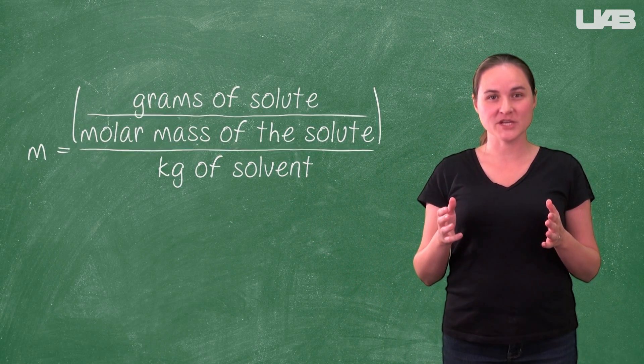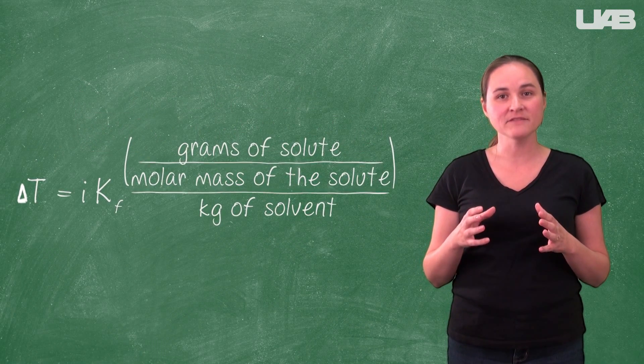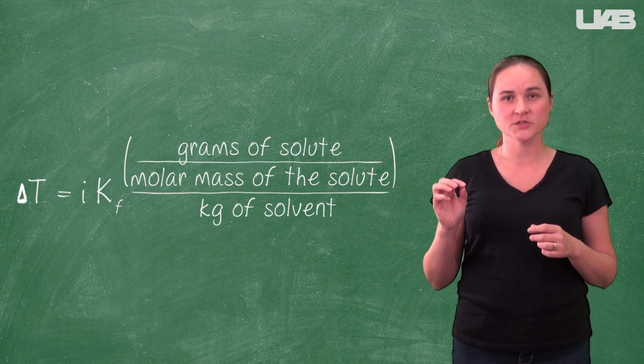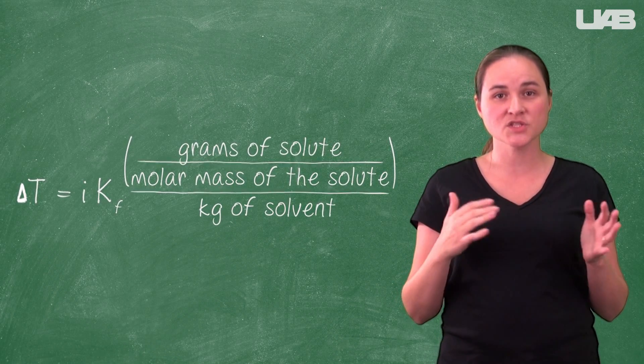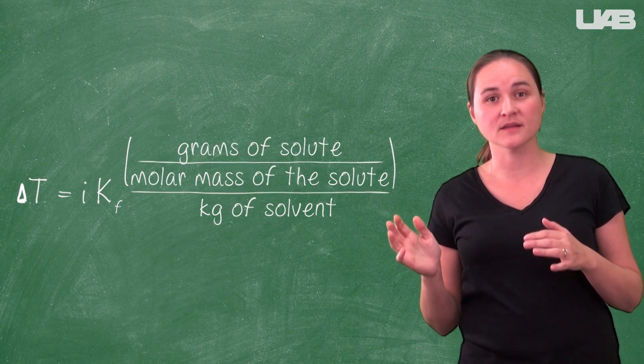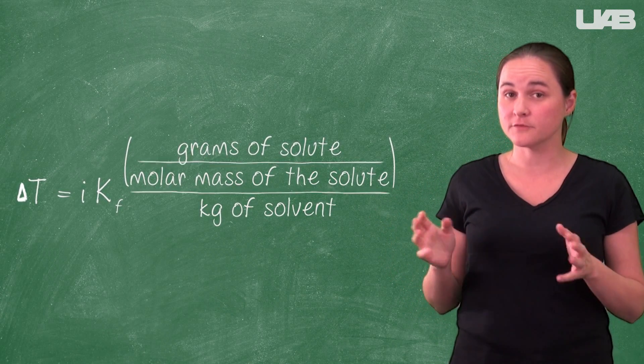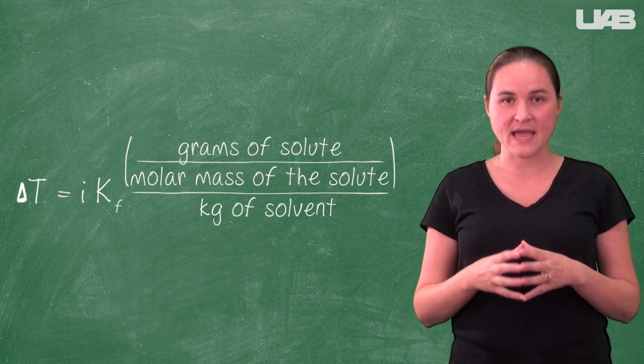Combining the molality equation written this way with the freezing point depression equation is our avenue to use a colligative property to determine the molar mass of a solute. We can measure both the masses of the solute and the solvent, as well as the temperature, which helps us determine how the colligative property in this lab, the freezing point depression, changes, and then we can calculate the molar mass.